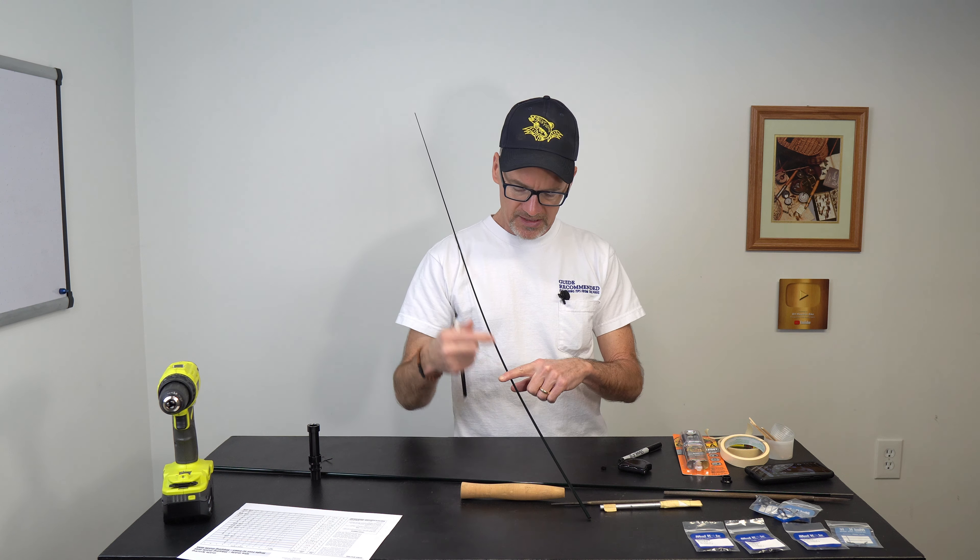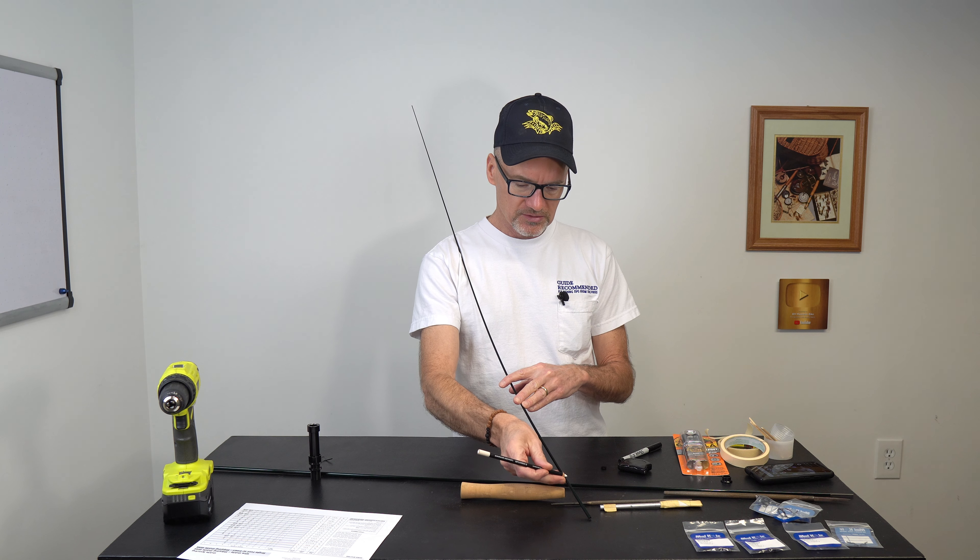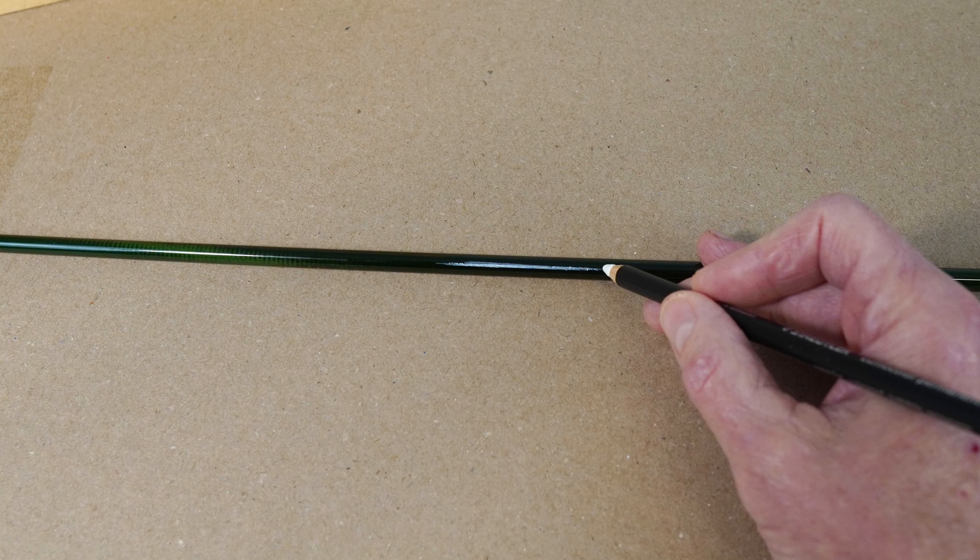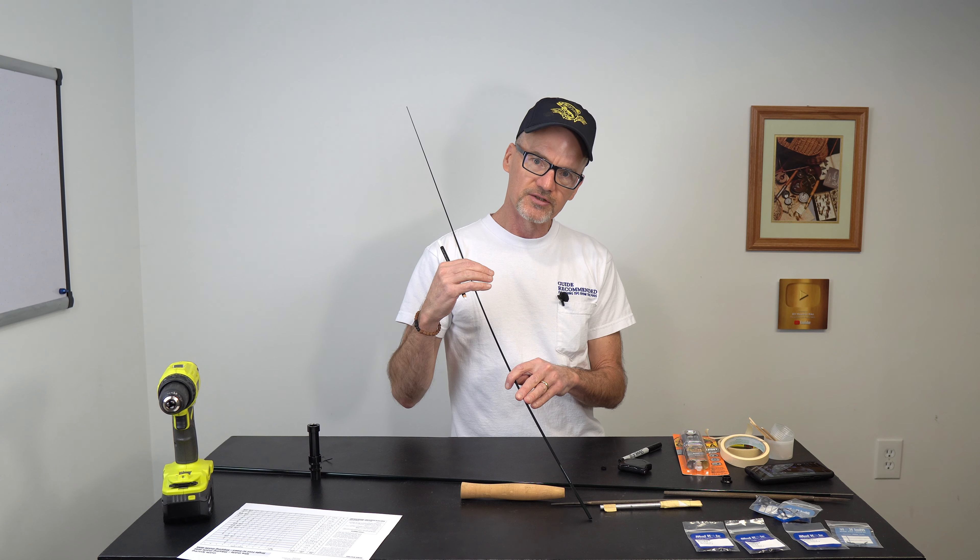Now you're going to see I left that in that position and then you mark that position, the top of it on the rod. This is going to be the line, the inside bend. It's going to be the line you're going to put your guides on.